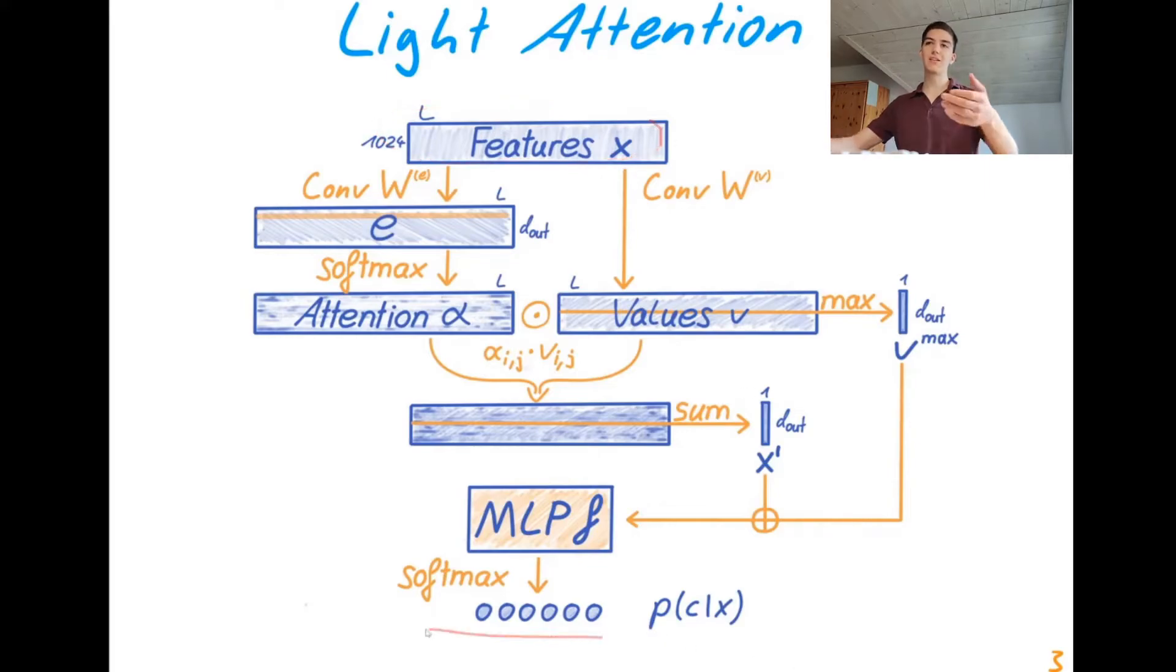What we came up with is this light attention architecture, where we also take these protein embeddings of our language models as input and we produce a classification output. And the method is really simple. We only have four learnable weight matrices here, one in the convolution and another one in the second convolution and two in our MLP. And the attention mechanism that we're talking about here is not self-attention and we're not quadratic in the sequence length. So how does it work? Well, we just take our protein representations and have one convolution running over them to produce these attention coefficients, so we call E over here. Then we just normalize them over the length dimension using the softmax function and we end up with these attention values.